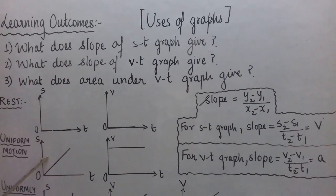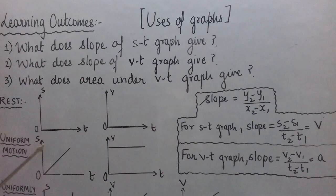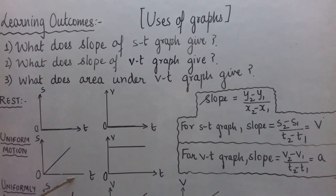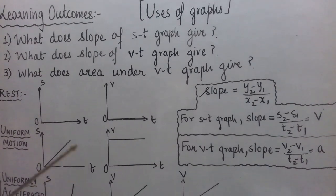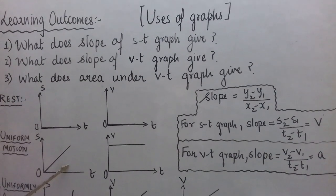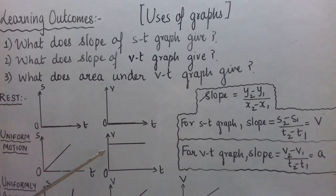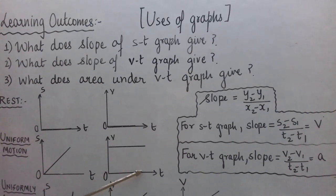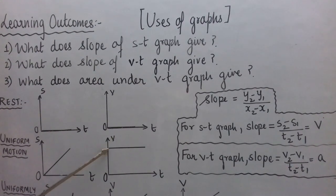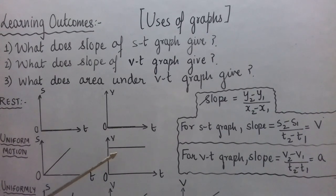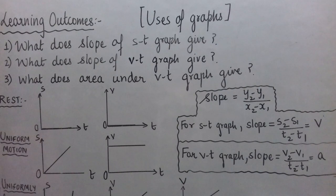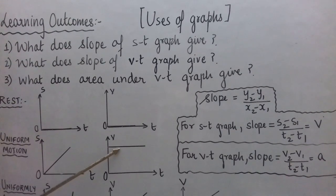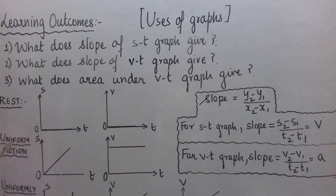Now if the ST graph is a straight line inclined to the time axis, equal distance is covered in equal intervals of time, and this is the case when the body is in uniform motion. For the VT graph, when time passes and the speed value remains constant, that is again the case when the body is in uniform motion. So this VT graph is for uniform motion.